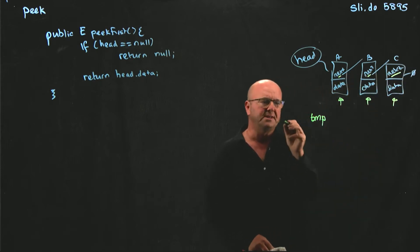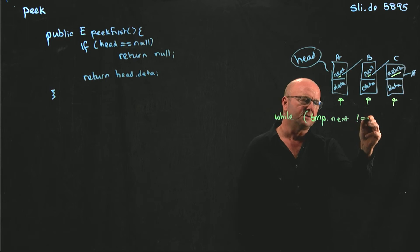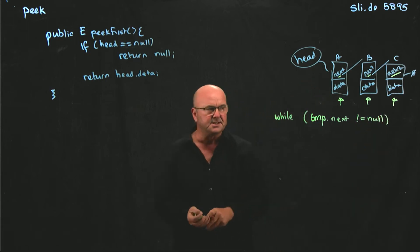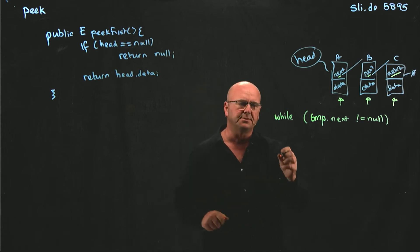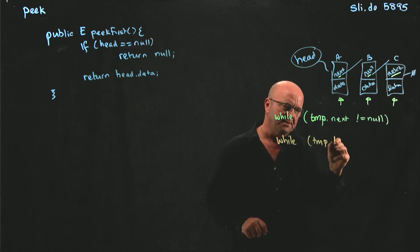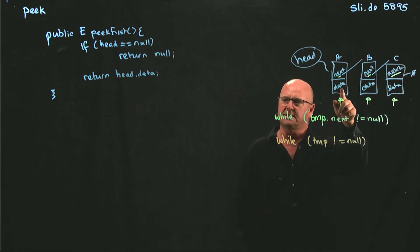And so the loop in this case would look something like this: while temp.next does not equal null. And I want to emphasize the difference between these two loops. While temp does not equal null, versus while temp.next does not equal null. In the first case, while temp.next does not equal null, we're going to start at the head. Temp.next does not equal null, go to the next element. Temp.next does not equal null, go to the next element.